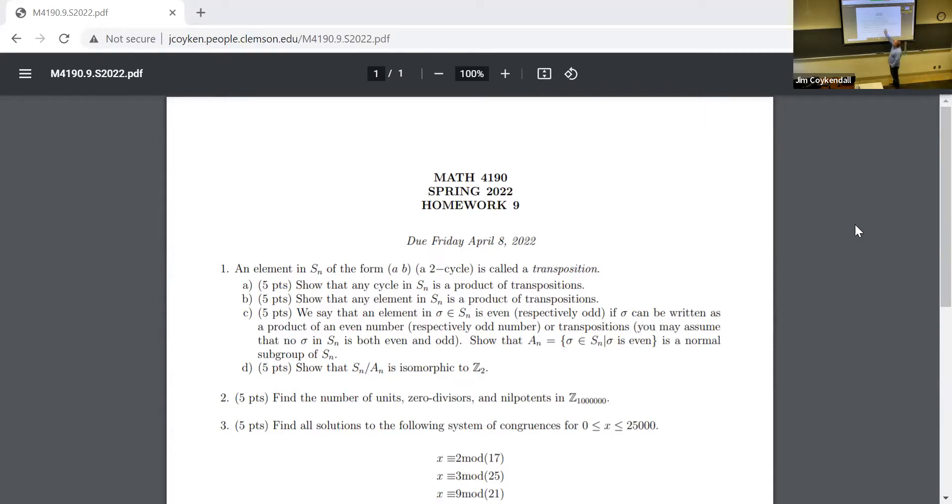And this is what this problem is about. First, show that any cycle in S_N shows specifically how you can take that animal right there and write it as a product of transpositions. Show that any element in S_N is a product of transpositions. By the way, a product of transpositions is not unique. Let me give you an example. There's two ways to write that, right? One, two is the same thing as swapping, swapping, and swapping that, right? So there are many ways to write transposition or write things as a product of transpositions.